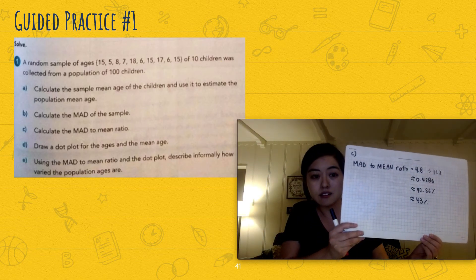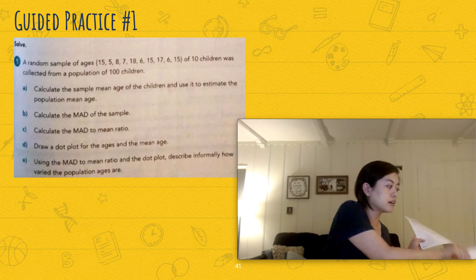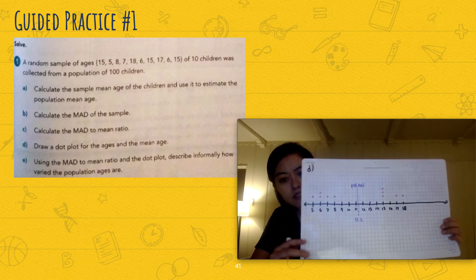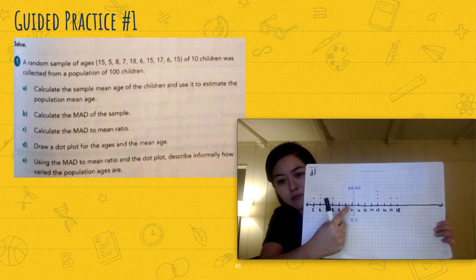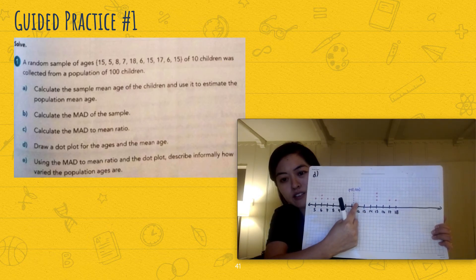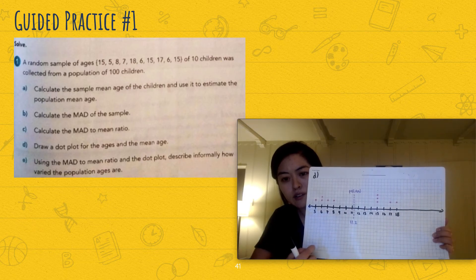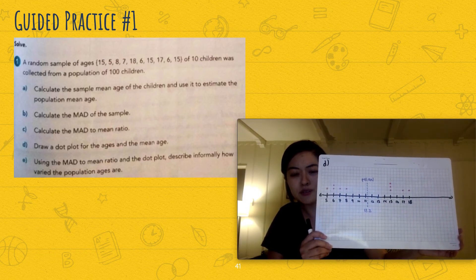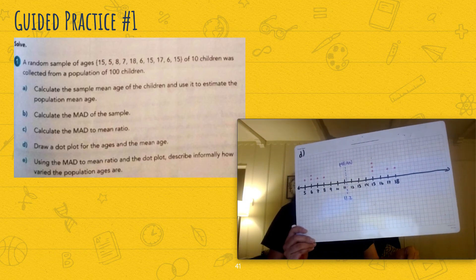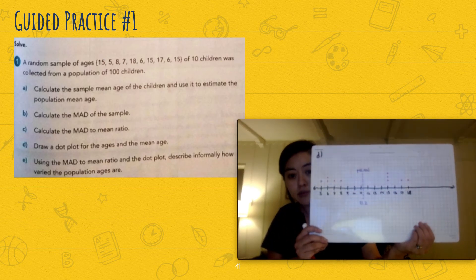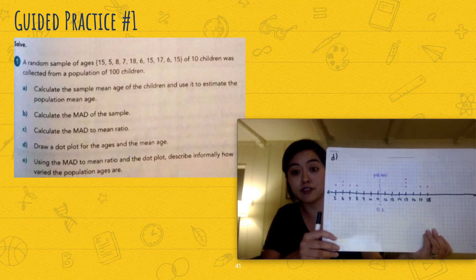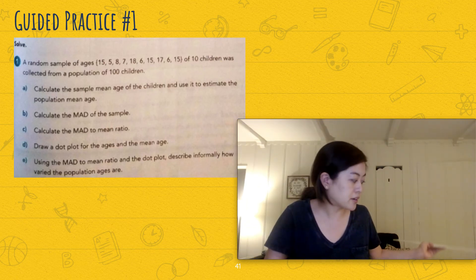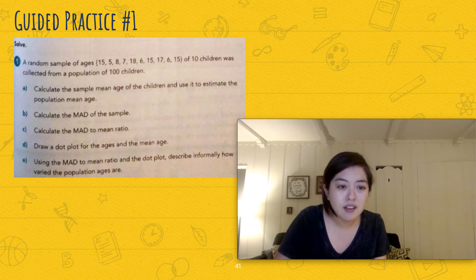So we're gonna look at this and we're gonna also look at the dot plot here. So this is our dot plot. And you see that there's a lot of data values that are quite far from the mean. Like there's no data value that's like right next to it, right? And so yeah, this shows that the data values are significantly varied from the mean.